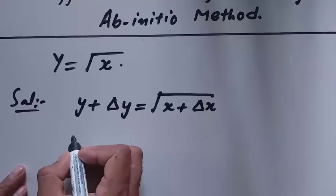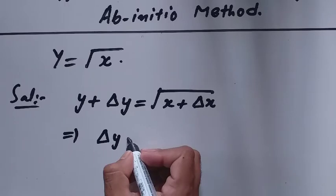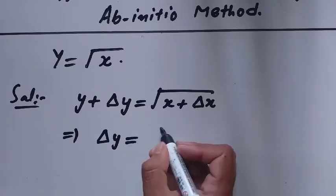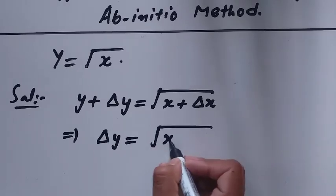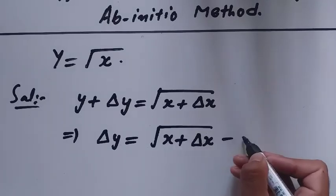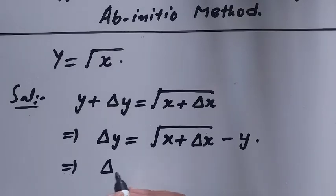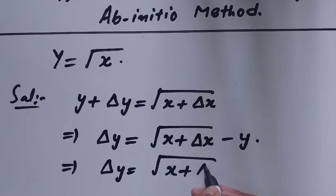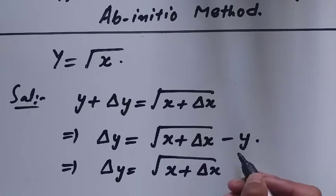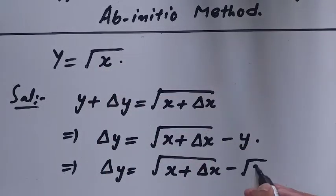Delta y — that is the small change in y — can be written as under root of x plus delta x, minus y. Or I can write: delta y is equal to under root of x plus delta x, minus under root x, since y equals under root x as given.